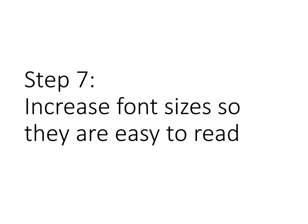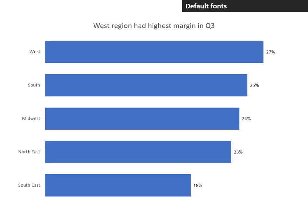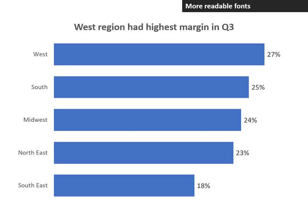Step seven: increase the font sizes so they're easy to read. By default, the fonts are quite small in any chart. When we increase the font size, we make those fonts much more readable and the text much easier for the audience to read and understand.